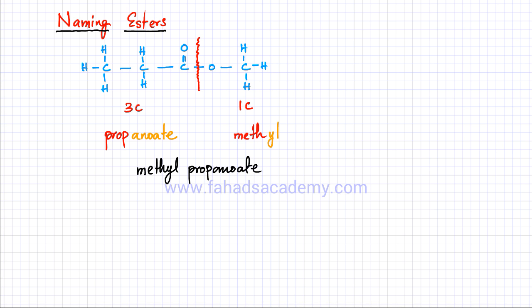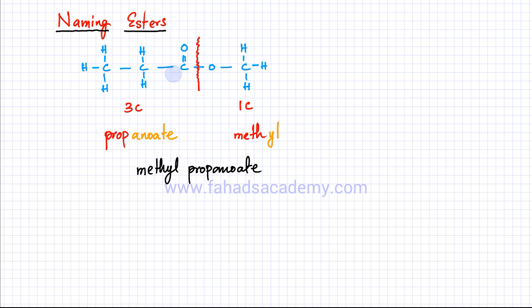To recap: you divide the ester from the middle into two parts. This side had one carbon atom, so it was 'meth'; this side had three carbon atoms, so it was 'prop.' The side attached to single bond O ends with '-yl,' giving 'methyl,' and the side attached to C double bond O ends with '-anoate,' giving 'propanoate.' The final name is methyl propanoate.